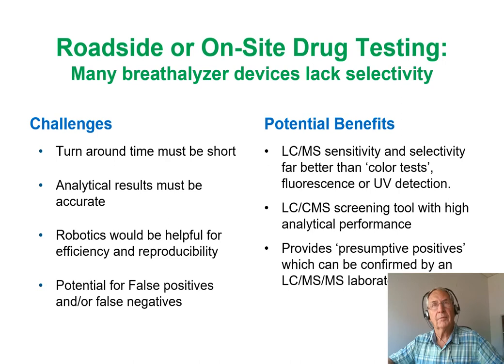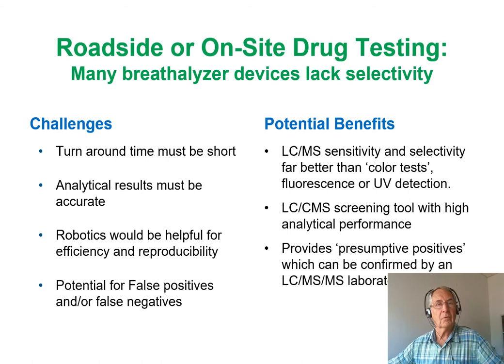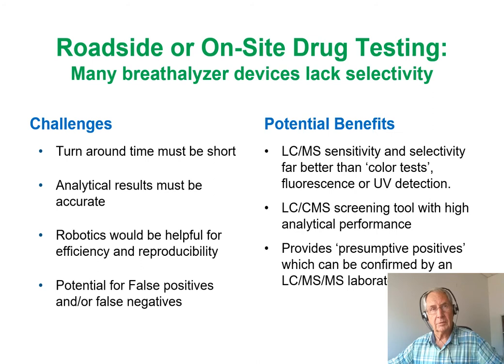Roadside or on-site drug testing faces challenges: many breathalyzer devices lack selectivity; turnaround and analysis time must be short; results must be accurate; robotics would help with efficiency and reproducibility since robots do the same thing repeatedly. It will be important to avoid false positives and false negatives, requiring a selective and sensitive detector such as a mass spectrometer.